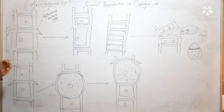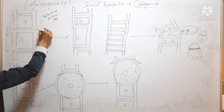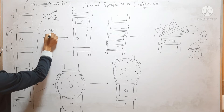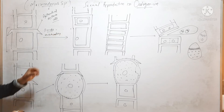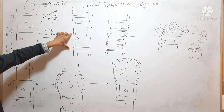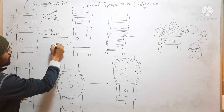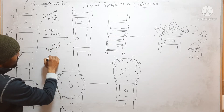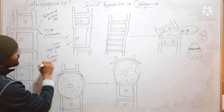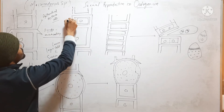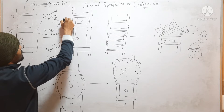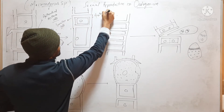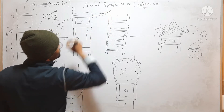The anthridial mother cell will divide transversely and mitotically into two cells: one larger lower cell which is called the sister cell, and one upper smaller cell which is called the antheridium.